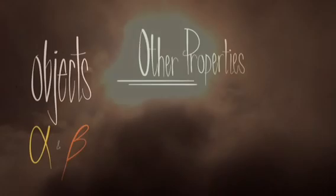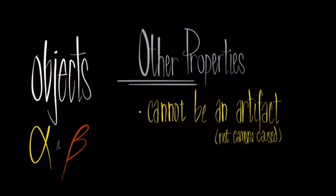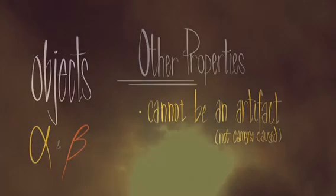Now what else do we know about objects alpha and beta? Well we know that it can't be a camera artifact and the way that we know this, I'm going to play this clip three times with different filters, is there are several moments where the clouds are both under and over the object seemingly at least.